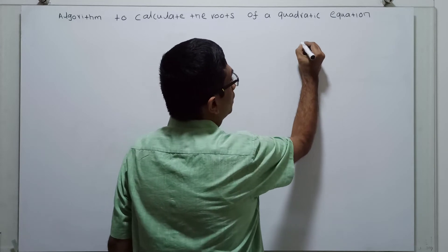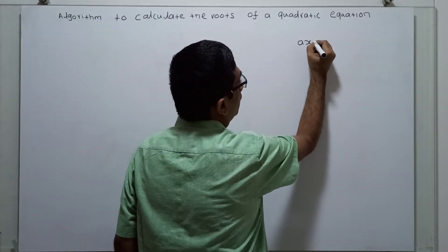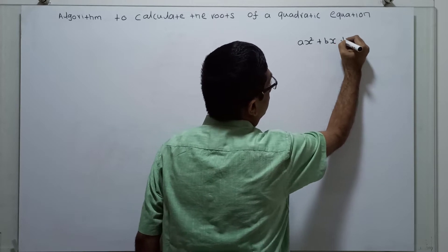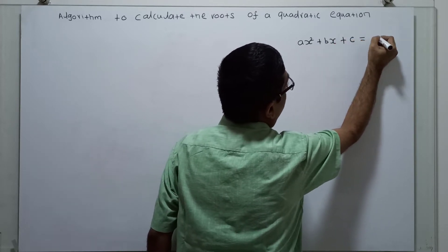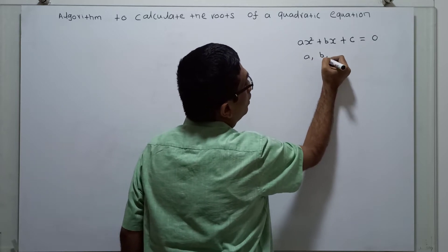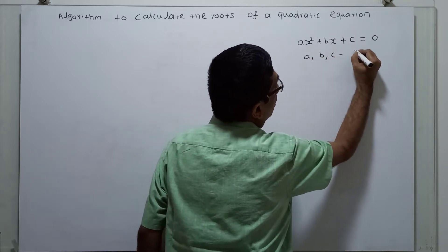The quadratic equation is in the form ax square plus bx plus c equal to zero. A, B, C are constants.